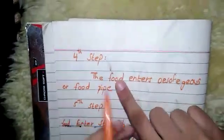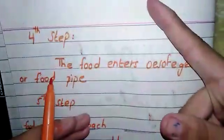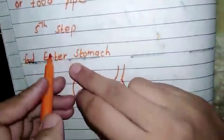First step of the digestive system is the food enters to the esophagus or wine pipe, or food pipe. Now fifth step is food enters to the stomach.